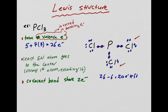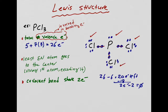Beautiful — this Cl has eight, happy; has eight, happy; has eight, happy. Just to double-check: one through eight on each Cl — happy, happy, happy. Now, my surrounding atoms are happy. I put down six plus six plus six — that's 18 electrons — so I have 26 minus 18 minus 6 (already used in bonds) = 2 electrons left. Those two electrons go on the center atom. Now let's check: is my center atom happy? One, two, three, four, five, six, seven, eight — yes, the center atom also has eight and is happy.